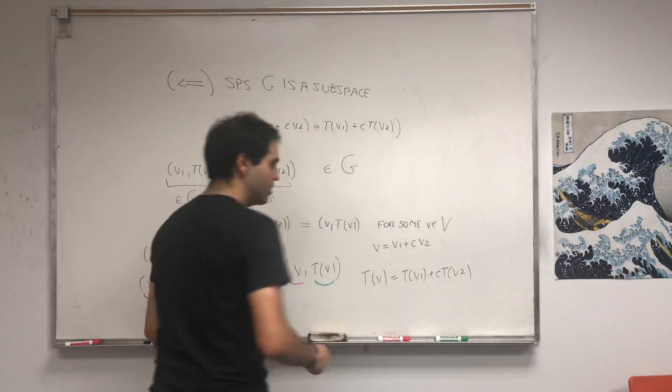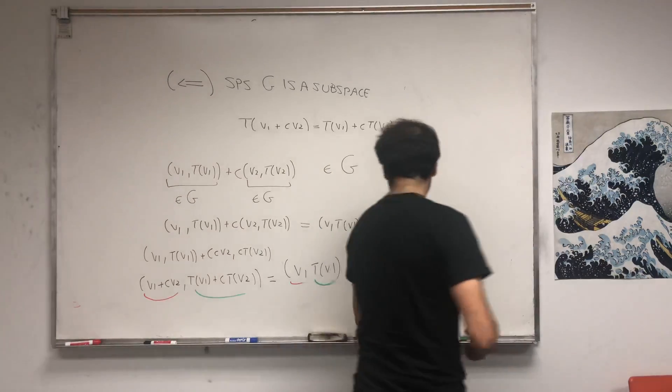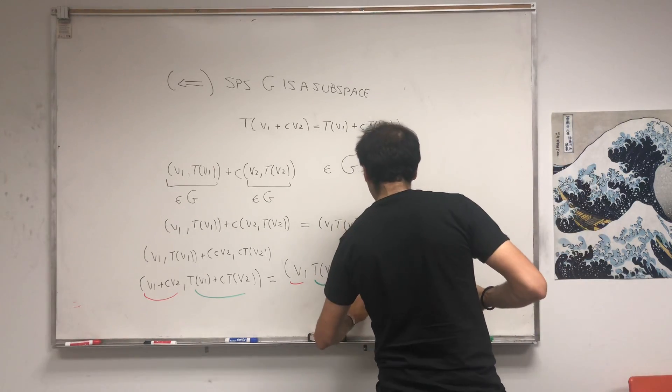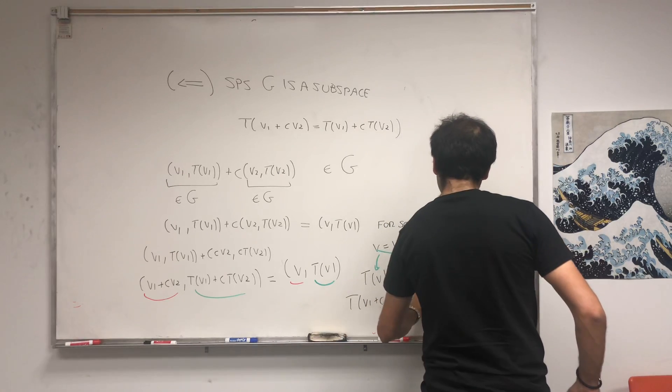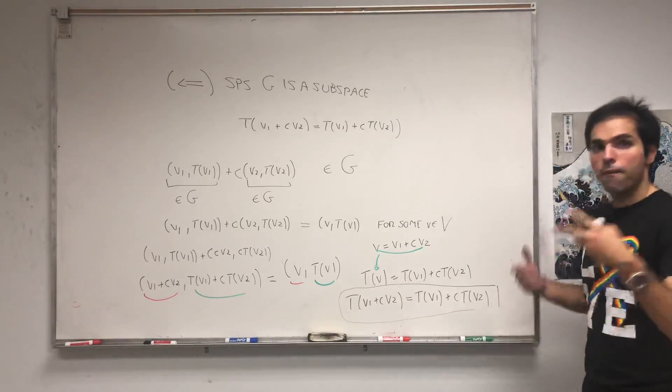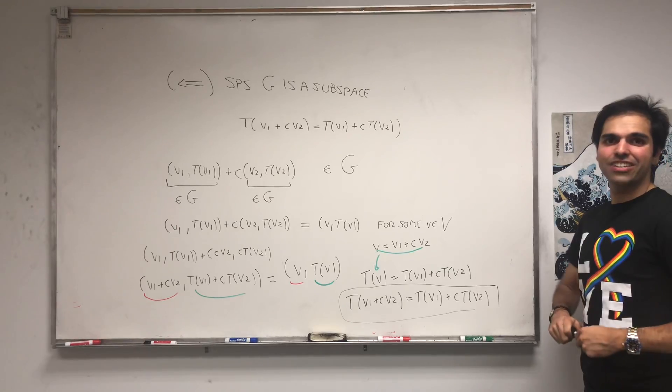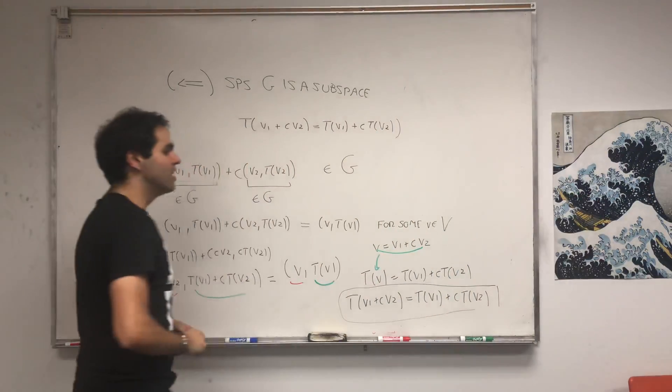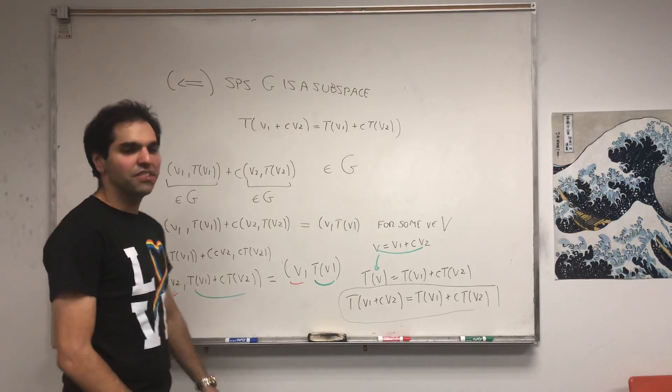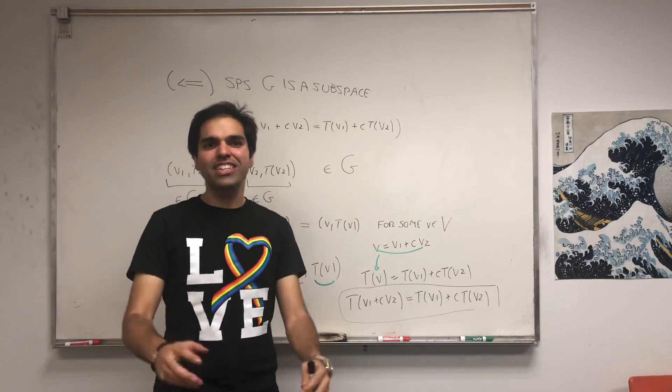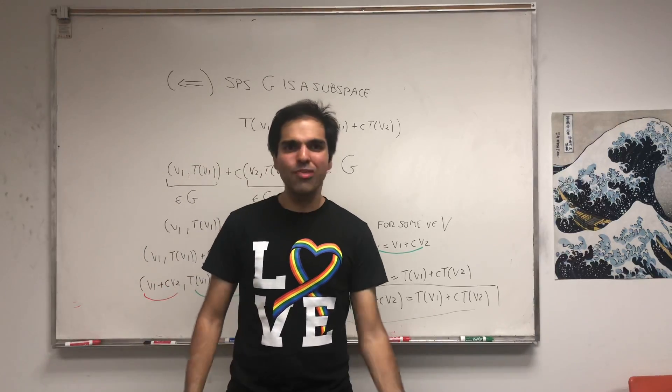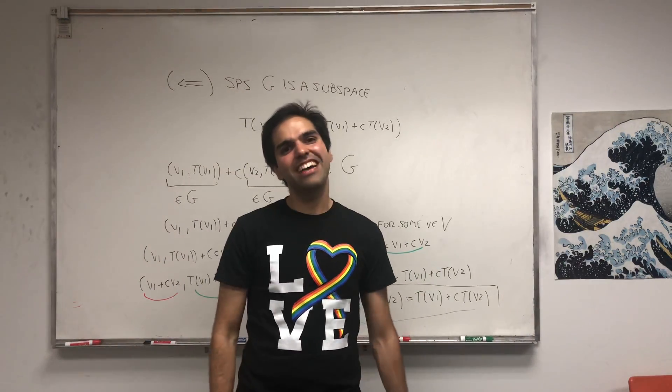Here's the beautiful thing: we know what v is. V is just v₁ + cv₂, and we just plug this back in here. What we get is T(v₁ + cv₂) is simply T(v₁) + cT(v₂), which is our linear transformation requirement. In fact, we have shown that T is linear. If G is a subspace, then T is a linear transformation. And if T is a linear transformation, then G is a subspace. Linear transformations and subspaces go together, like yin and yang. I hope you like this. If you want to see more math and linear algebra, please subscribe to my channel. Thank you.